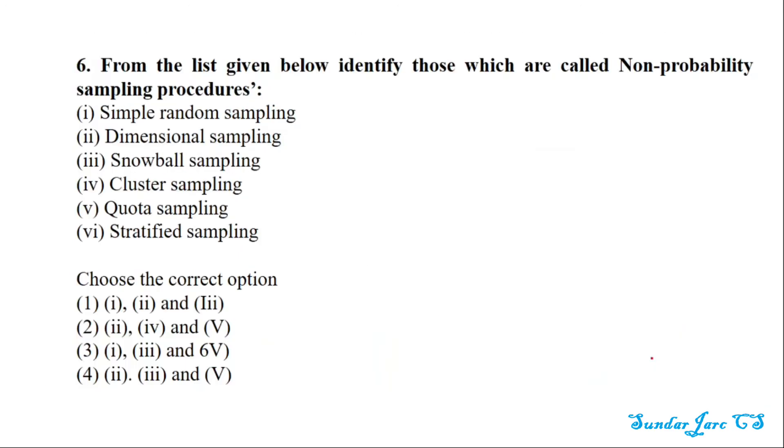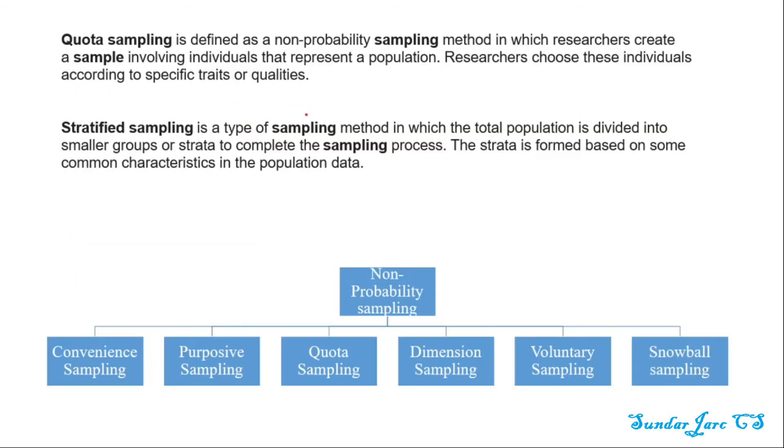Simple random sampling is not in the non-probability list, so that is wrong. Dimensional sampling is confirmed as a non-probability sampling method.